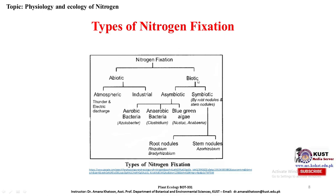In symbiotic nitrogen fixation, nitrogen is fixed through root nodules and stem nodules. In root nodules, the important bacteria involved are Rhizobium and Bradyrhizobium. In stem nodules, Anthorhizobium is involved. Nitrogen is fixed in these particular structures called nodules.